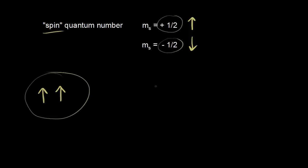If you have one electron with spin up and one electron with spin down, the magnetic fields of those electrons cancel each other out. We call this situation diamagnetic.